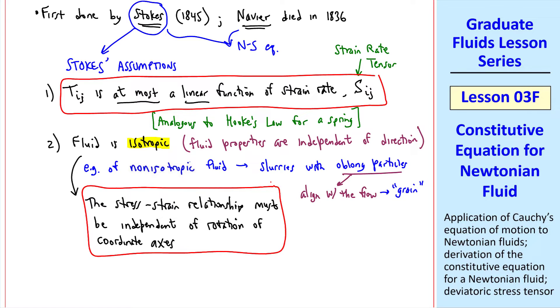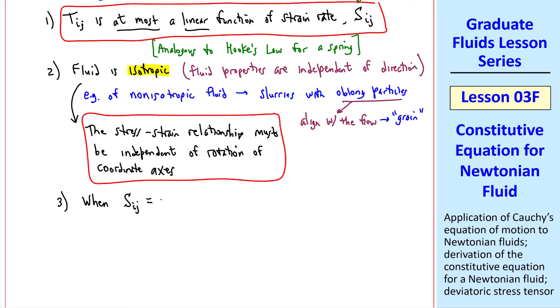Number three is a little simpler. When the strain rate tensor, Sij, is zero, which means there's no motion. In other words, the fluid is at rest and not deforming. It's just sitting there at rest.